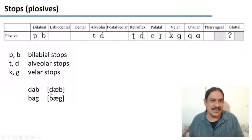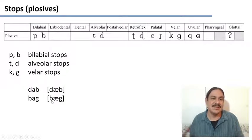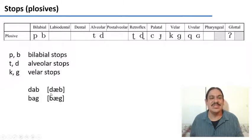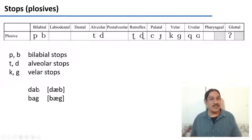These are easy because the IPA symbol is exactly the same as the orthographic symbol in English. These are dab and bag. This one is an alveolar stop. This one is a bilabial stop. This one is a bilabial stop. And this is a velar stop. Dab, bag. These are the IPA transcriptions for these words.